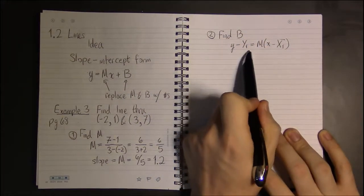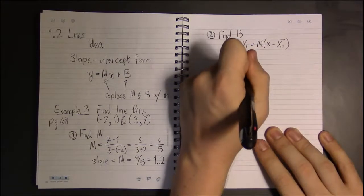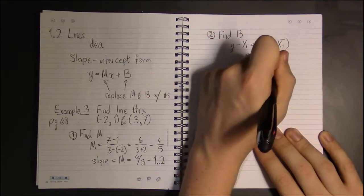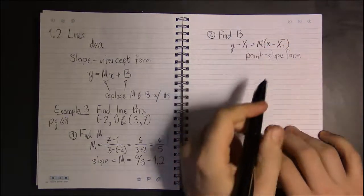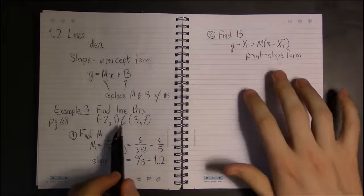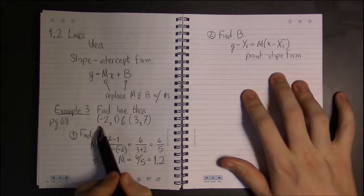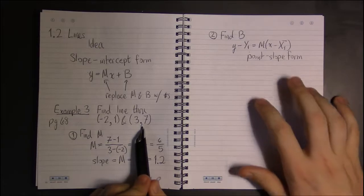y minus y1 is m times (x minus x1). This is point-slope form. Well, we can use either point. It doesn't matter which one. We should come out with the same answer if you do everything right.